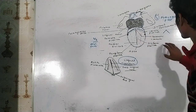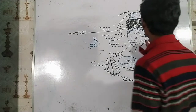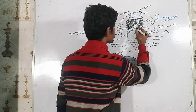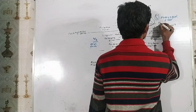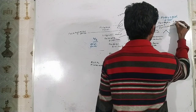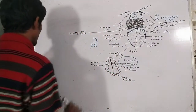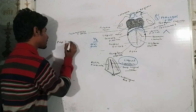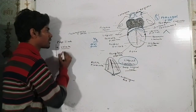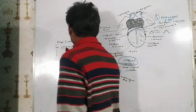At the apex of the sulcus terminalis, there is an opening called the foramen cecum. Now let us talk about the papillae present on the dorsal surface of the tongue. The first type are the vallate papillae, also called circumvallate papillae. They are present in front of the sulcus terminalis and are generally 8 to 12 in number.